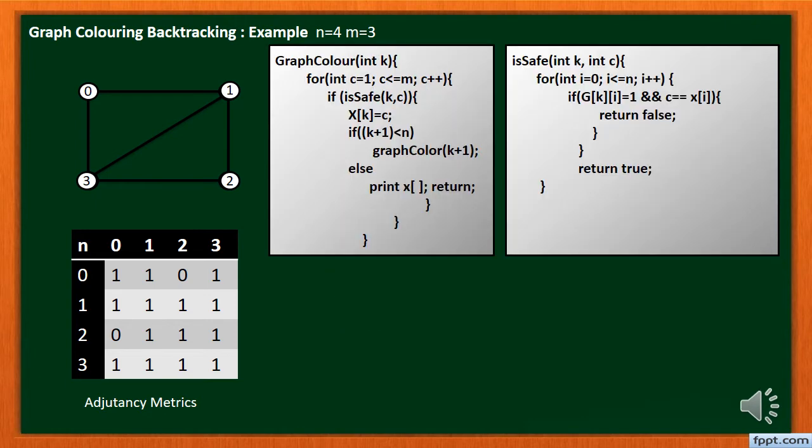Let's start with graph color 0, that is node 0. Here K equals 0 and let's take C equals 1, that is red color. Then pass K equals 0 and C equals 1 to ISSAFE method to check whether C equals 1 is safe for node 0 or not. In ISSAFE method set I equals 0, then check G of 0, 0 equals 1 or not, and also check if the given color is present in the given node's adjacency matrix or not.